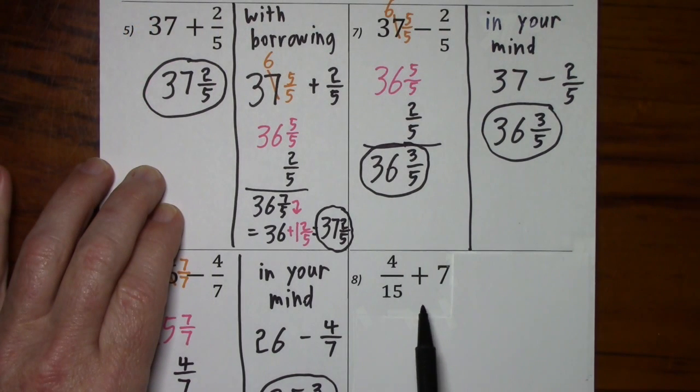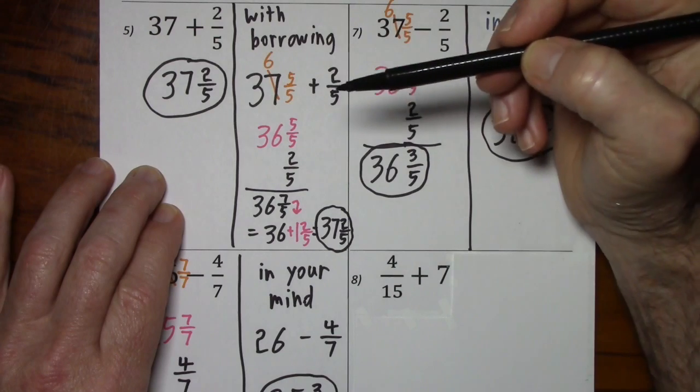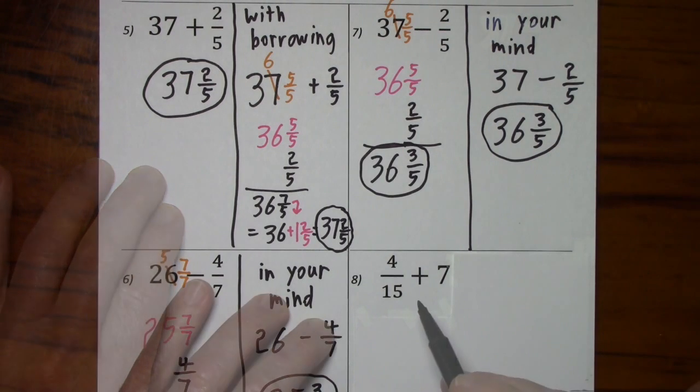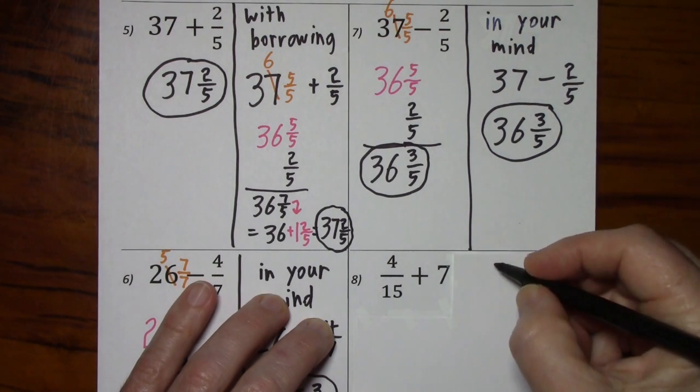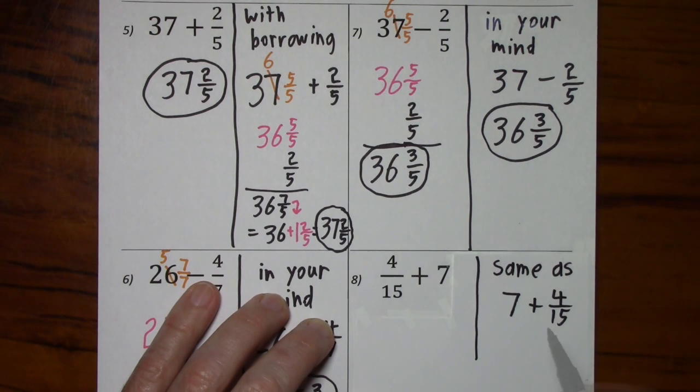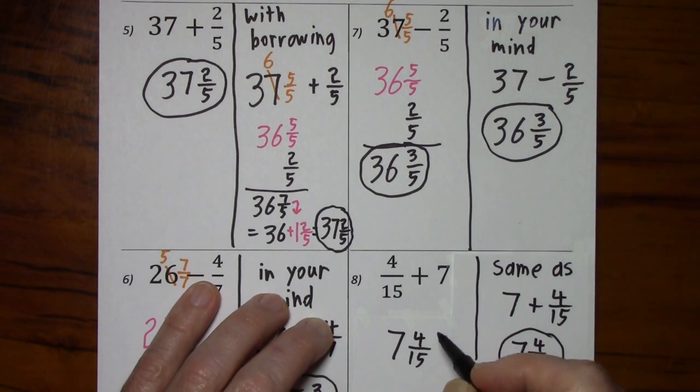Looking at number 8, both numbers are positive. We're going to add. That means we can rearrange their order. So, number 8 is actually like number 5. We can just put the whole number and the fraction together. So, 4 fifteenths plus 7 is the same as 7 plus 4 fifteenths. So, we know we can put these together as 7 and 4 fifteenths, which is to say we can put these together as 7 and 4 fifteenths.